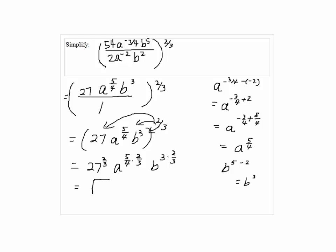27 to the 2/3 means cube root of 27 squared. And here, we can cancel 2 and 4, so we have a to the 5/6. And 3 is canceled, so we have b squared.